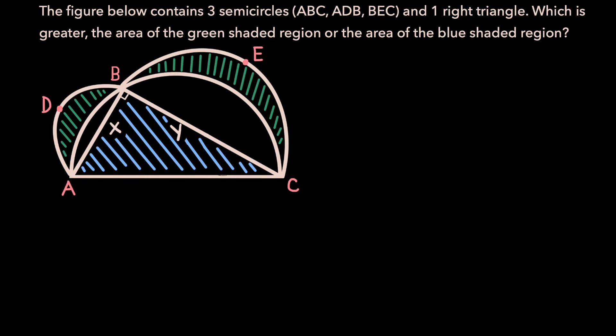In this video, we will be going over the following problem. The figure below contains three semicircles, ABC, ADB, and BEC, and one right triangle. Which is greater: the area of the green shaded region or the area of the blue shaded region?